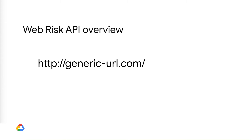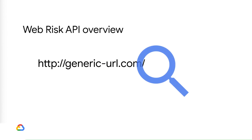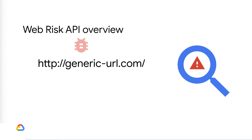We all know that URLs contain unsafe elements like phishing, malware, and unwanted software, and it's often impossible to find this before it compromises your users. That's why we've built WebRisk API, a new offering from GCP that enables any company to find unsafe URLs before their users do.